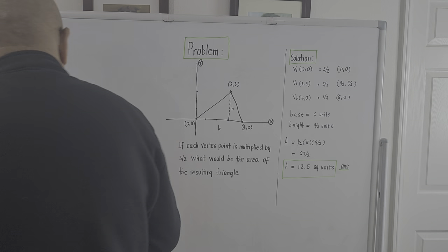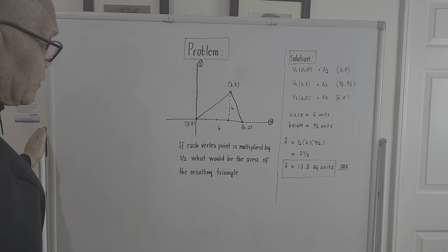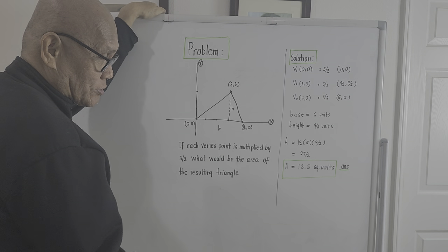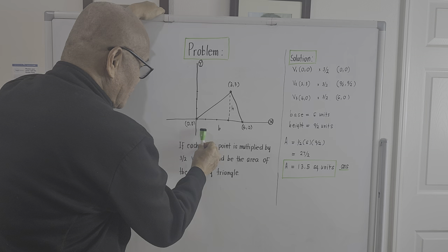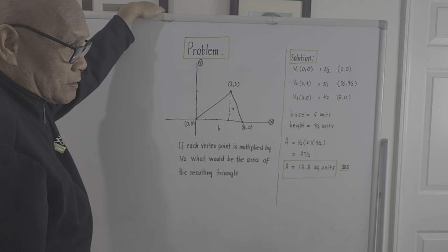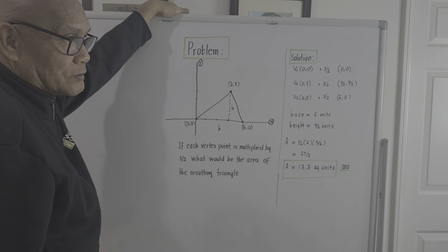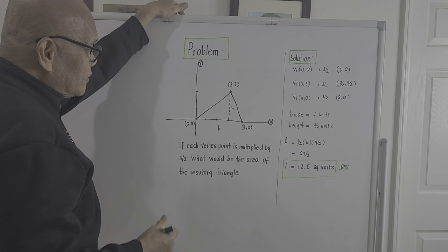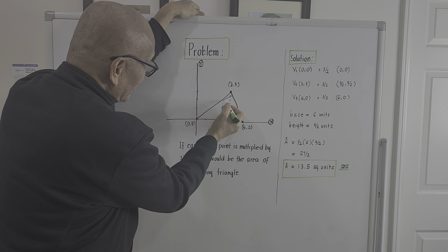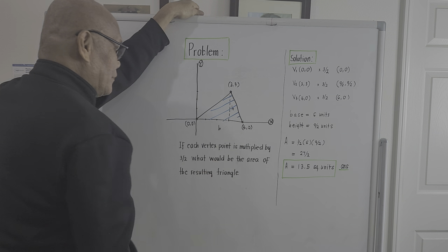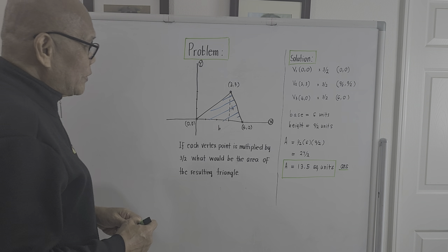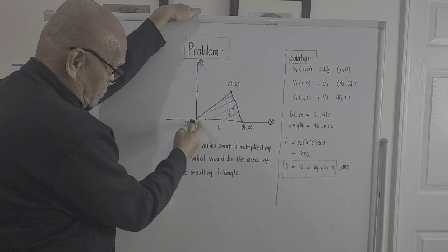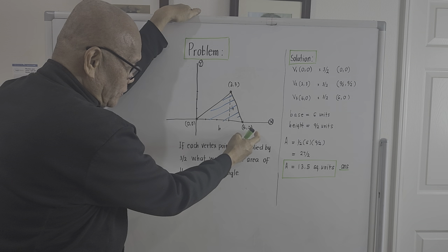We are given a figure that refers to the Cartesian coordinate system — this is the x-axis and this is the y-axis. Graphed on the Cartesian coordinate system are three vertices: vertex number one, vertex number two, and vertex number three, because we are given a triangle.